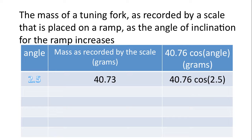And so here's our first row of data. 2.5 degrees for the angle. 40.73 grams, as measured by the scale. And we're going to do 40.76 times cosine of 2.5. That's 40.72.